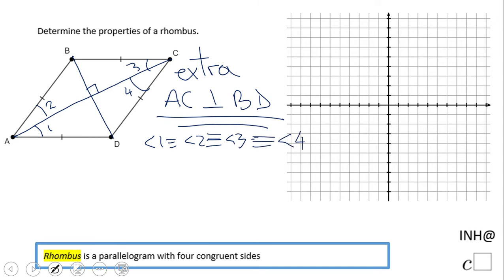Right? Yeah, diagonal AC bisects angle A and C. But that is true also for these angles. So five, six, seven and eight. All these angles are congruent.